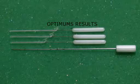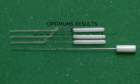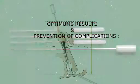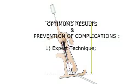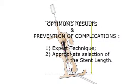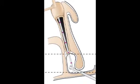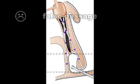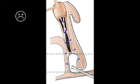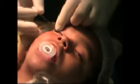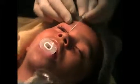Optimum results and the prevention of complications depend directly on two elements: expert technique and appropriate selection of the stent length. If metal-to-metal contact is not achieved in the nasal fossa, it is possible that a false passage may have been created. To avoid failure, one should restart the procedure from the beginning.